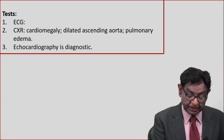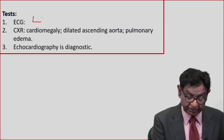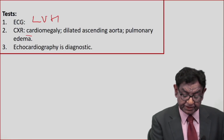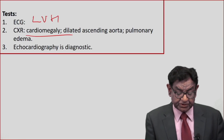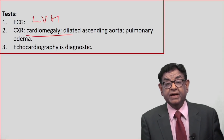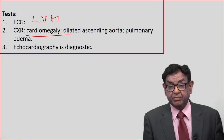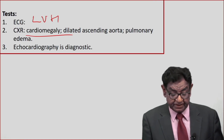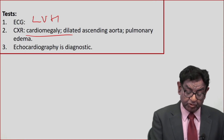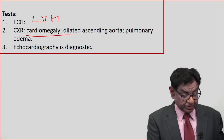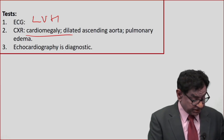ECG will show left ventricular hypertrophy. Chest X-ray will show cardiomegaly, dilated ascending aorta, and possibly pulmonary plethora. Echocardiography is the diagnostic tool by which you can really confirm the condition.